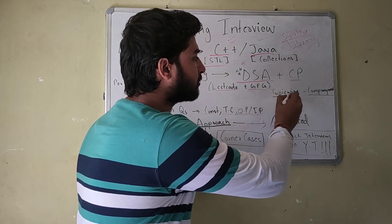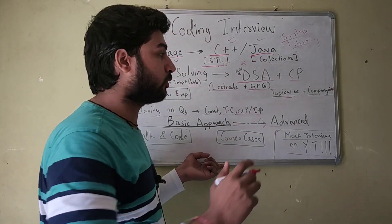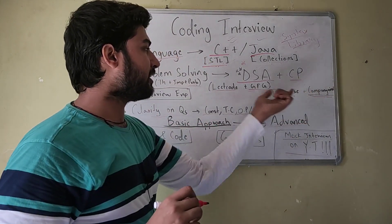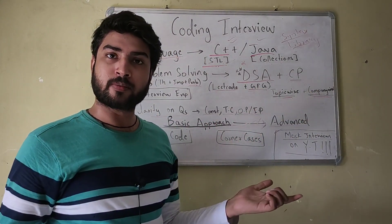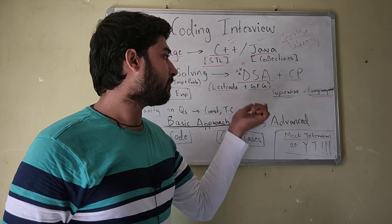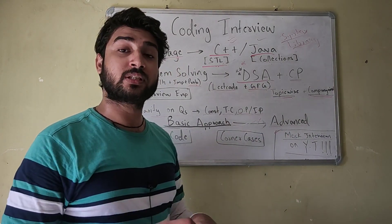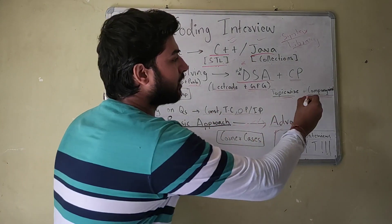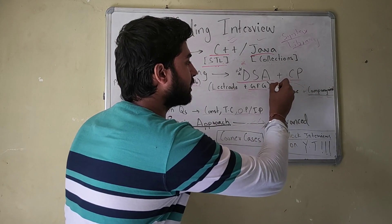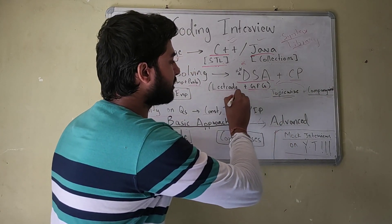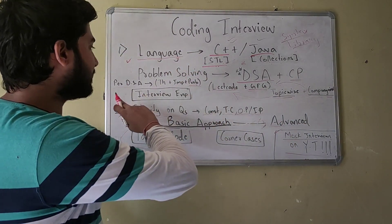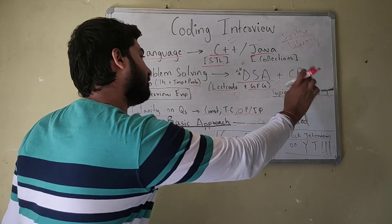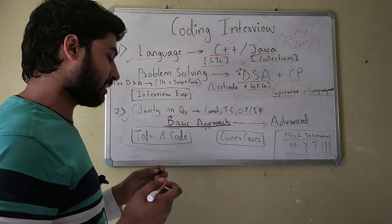Once you have solved enough problems topic-wise, then you need to solve company-wise problems. GeeksforGeeks has archives of almost every major company like Amazon, Google, and Facebook — and it is free of cost. So once you are done solving problems topic-wise on LeetCode, solve company-wise problems from GeeksforGeeks.